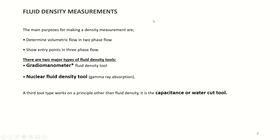There are two important points for the density sensor. Someone might ask: what is the usefulness of the density measurement sensor? The first is to determine volumetric flow. The second is to show entry points — as mentioned, PLT diagnoses problems like gas entry and water entry, and this is shown by the density sensor.